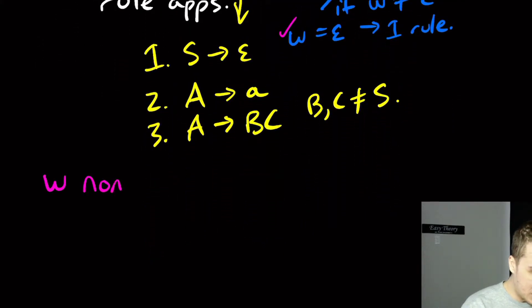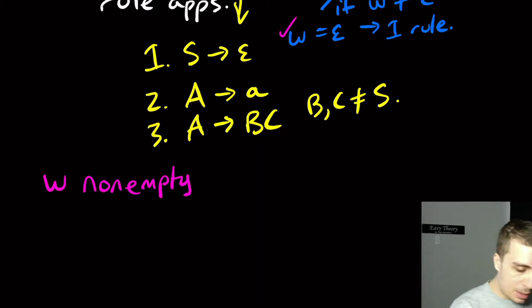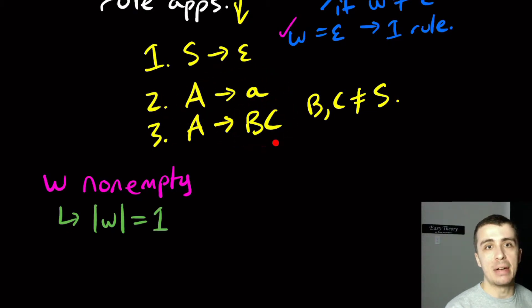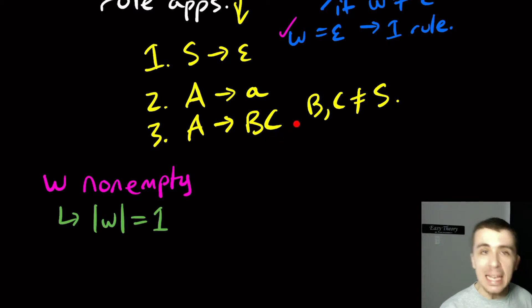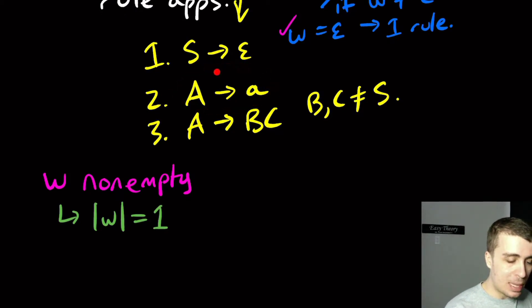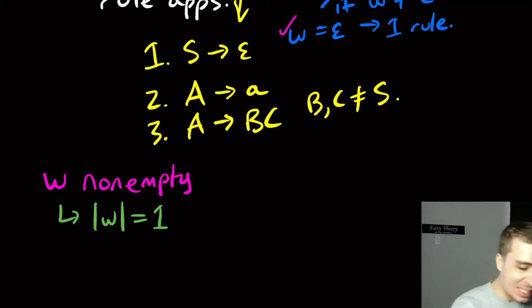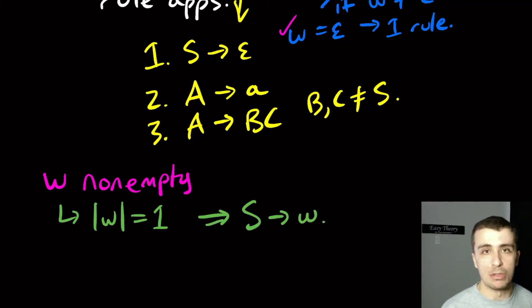Let's consider when w is non-empty. We have two cases. What if the length of w is exactly one? Then we could only apply the rule where a variable makes a single terminal. If we apply the rule that produces two variables instead, those two variables are not the start variable, so they must each generate at least one character — giving us at least two characters total, which is too many. So we must apply a rule of the form where the start variable makes a single terminal, giving exactly one rule application: S generates w in exactly one step.